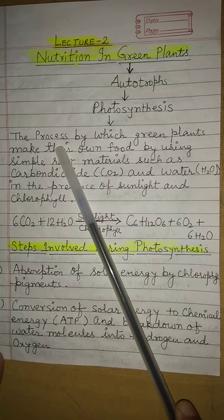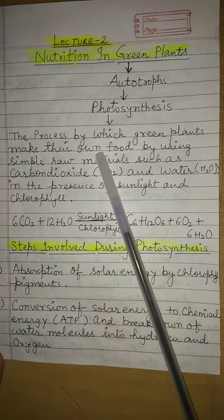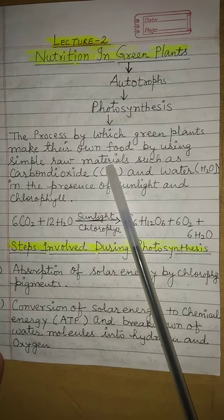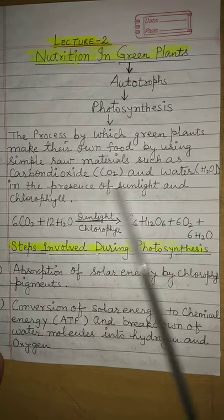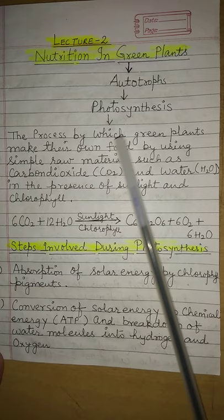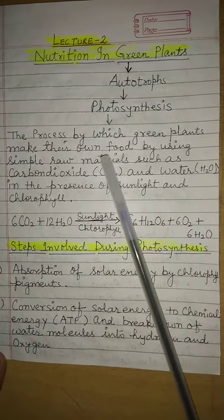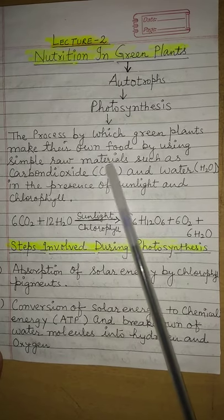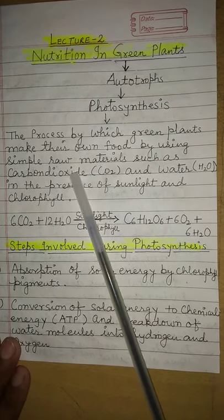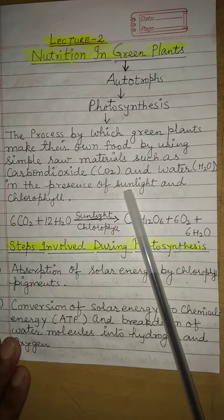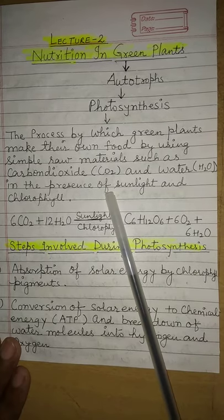What is photosynthesis? Photosynthesis is the process by which green plants make their own food by using simple raw materials such as carbon dioxide and water in the presence of sunlight and chlorophyll. These raw materials combine with the help of sunlight and chlorophyll to form food.